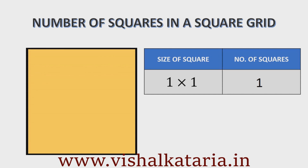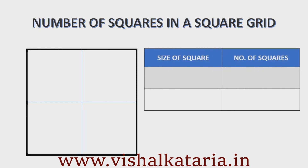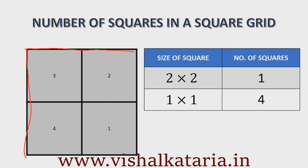Now instead of this, if I take a 2 by 2 square grid, let's try to find the biggest square. The biggest square is a 2 by 2 square whose side is 2 units, and there is only one such square. After the 2 by 2 square, the next smaller square is 1 by 1, and there are four 1 by 1 squares. Therefore, in this grid there are a total of 5 squares.